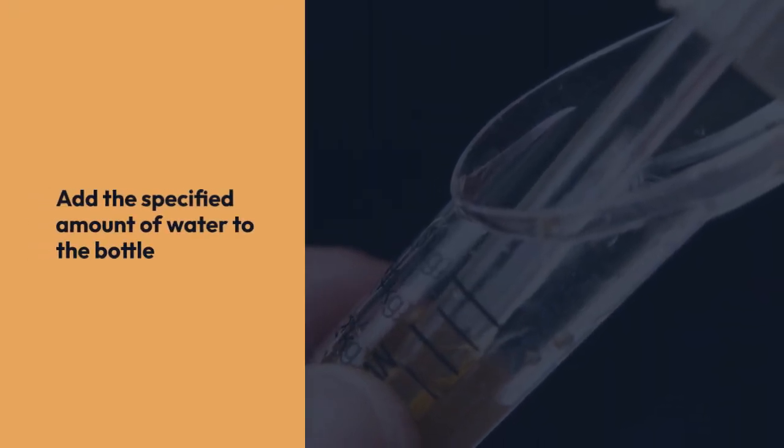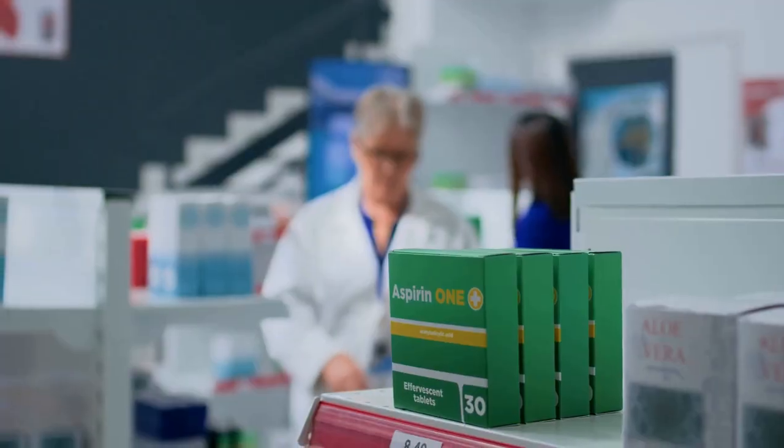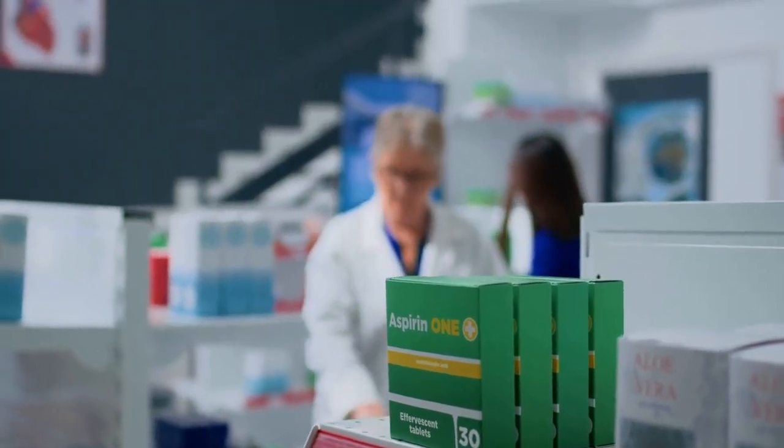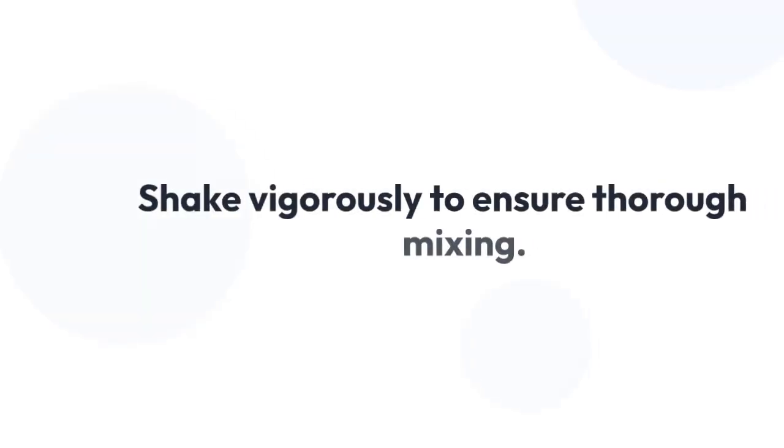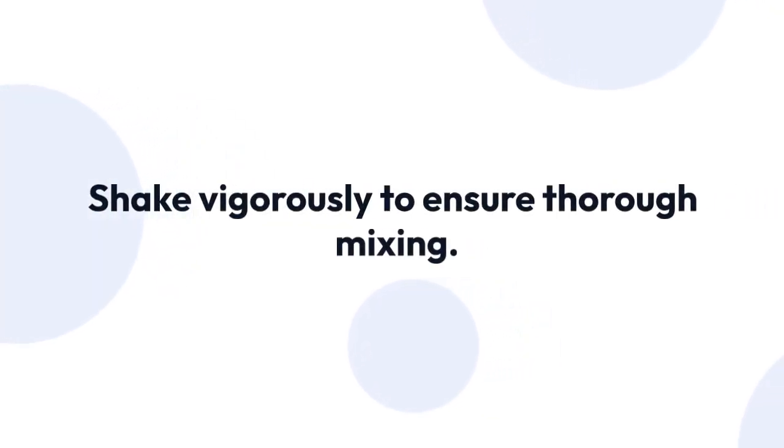Now add the specified amount of water to the bottle. This is usually done in two stages. Add a first portion of water, often less than the full amount. Then close the bottle tightly and shake it well until the powder is completely dissolved and the mixture is smooth. Make sure you're shaking vigorously to ensure thorough mixing.